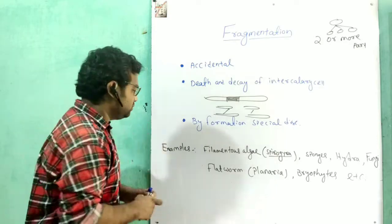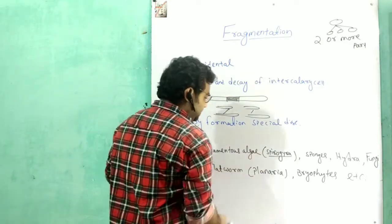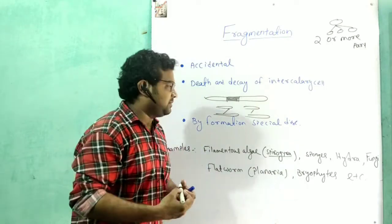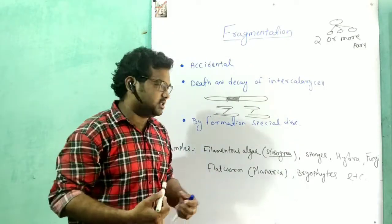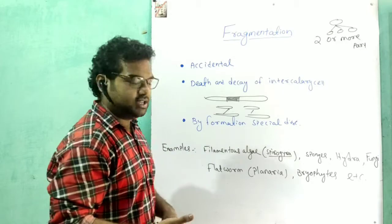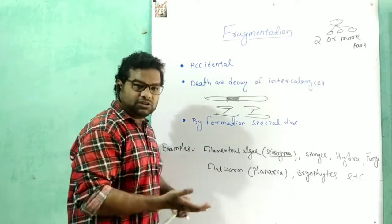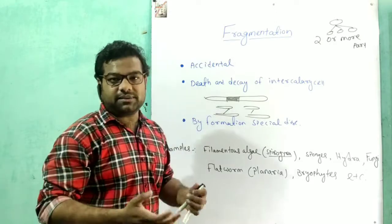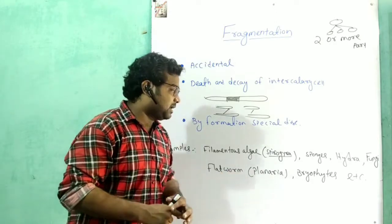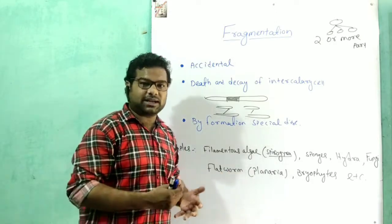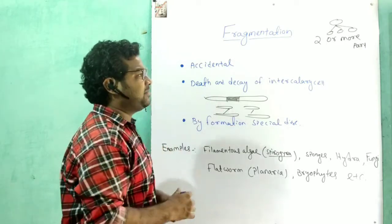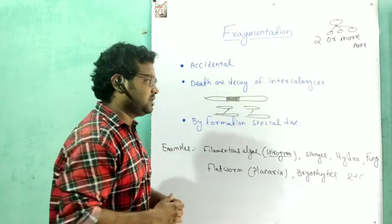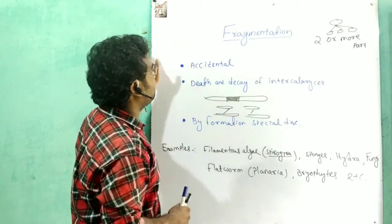Fragmentation reproduction occurs in filamentous organisms like Spirogyra, as well as sponges, hydra, fungi, and flatworms. This is all about fragmentation, which is a type of asexual reproduction.